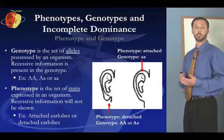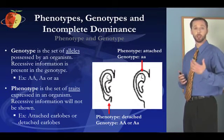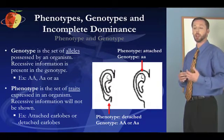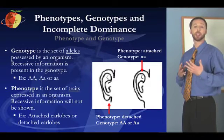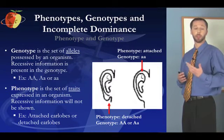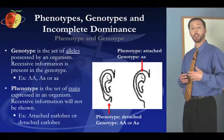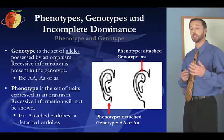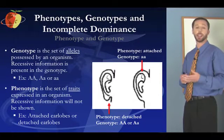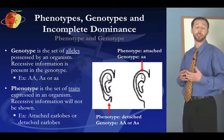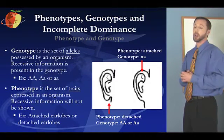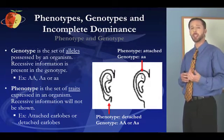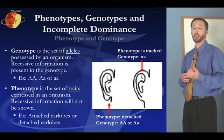Genotype is the set of alleles possessed by an organism — you can just remember 'genes' for genotype. Recessive information is present in the genotype. So AA means you're homozygous dominant with two capital As. Capital A, lowercase a is heterozygous, meaning you've got a dominant as well as a recessive. Or lowercase a, lowercase a, which is homozygous recessive. In those latter two cases, the recessive information is still present in the genotype.